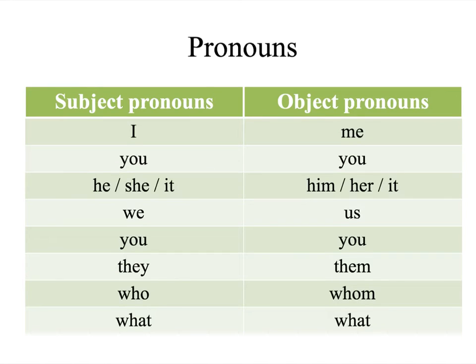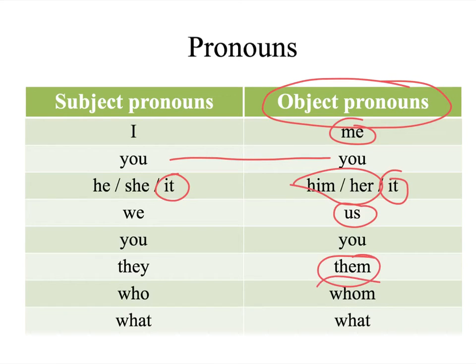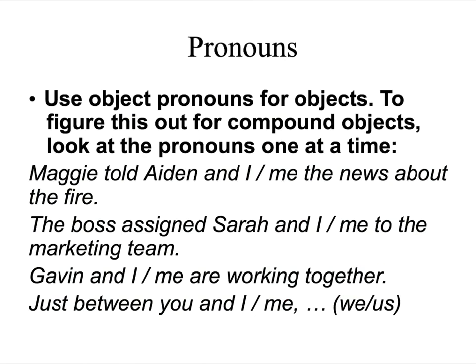Pronouns are important here because when you have a pronoun in an object position — and that's a direct object, an indirect object, or the object of a preposition — it has to be in the object pronoun form. Some of these are the same, like 'you' and 'it,' and some of them are different: me, him and her, us, them, whom. So make sure that you're using an object pronoun when you have an object.